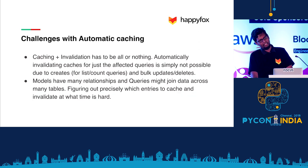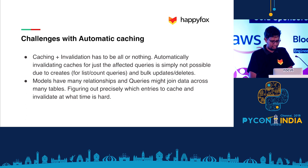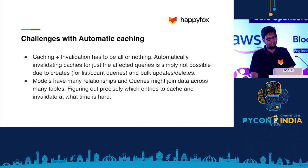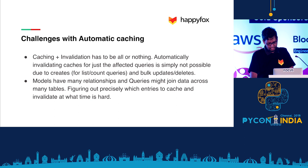The challenge with this type of automatic caching and invalidation is that it's very hard to figure out when something should be invalidated if your model has a lot of dependencies, or if your queries are joining across a lot of different models.